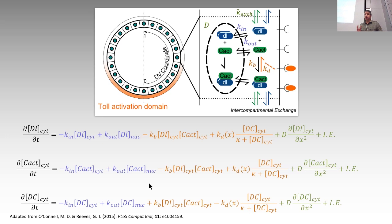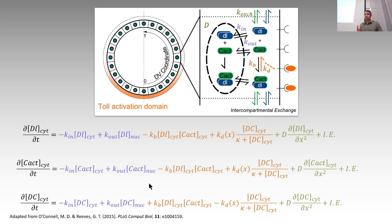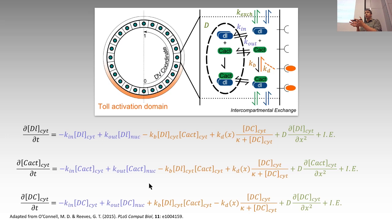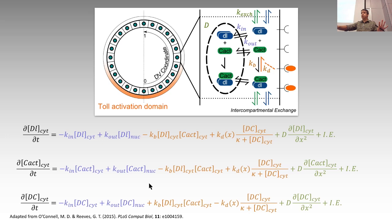Remember that we have this model of the dorsal gradient. What's unfortunate about it is we can take this model and fit it to data, but it's still underconstrained. There's a wide range of parameter values that all fit the data reasonably well. If all I have are my dorsal versus data and I fit the model to those data, I could be at one end of the parameter space or a whole different end, and both fit the data well.